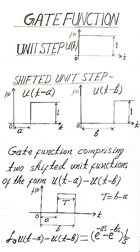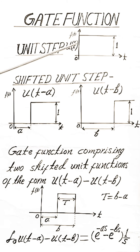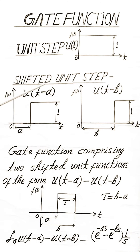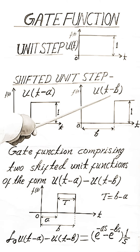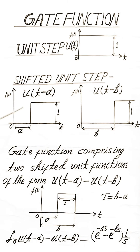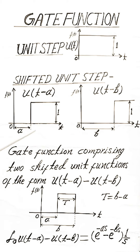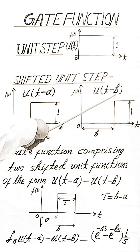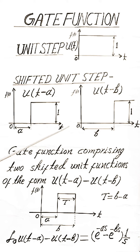The gate function — you can see in the diagram — includes the unit step function U(t), the shifted unit step function U(t-A), and U(t-B). Here, U(t) is shifted by time A on the right-hand side, and U(t-B) is the unit step function shifted by time B on the right-hand side.